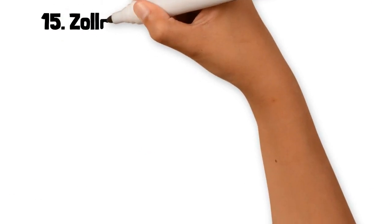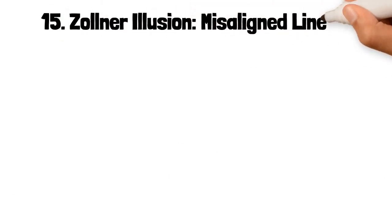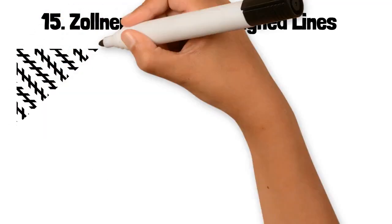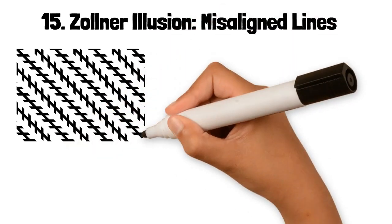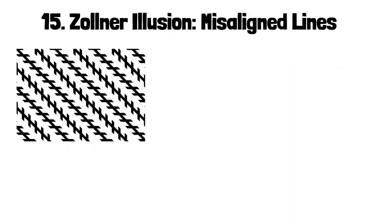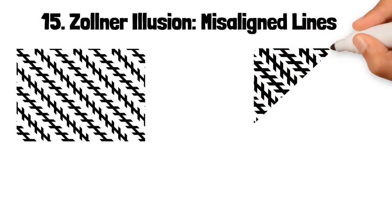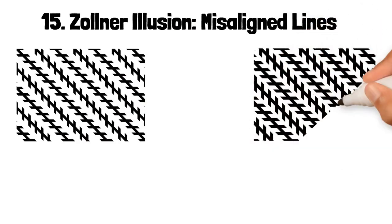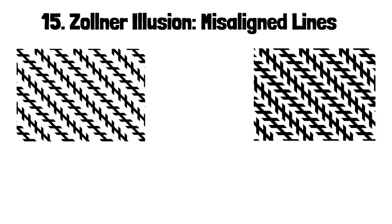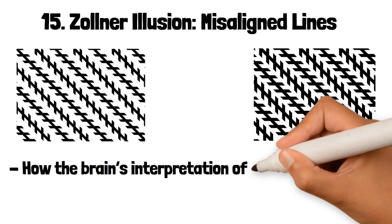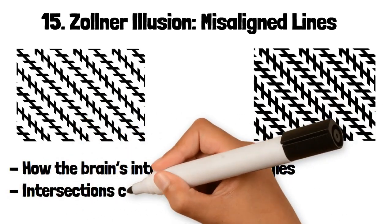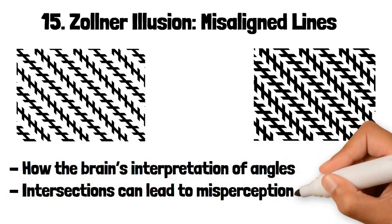15. Zollner Illusion: Misaligned Lines. The Zollner illusion involves parallel lines that appear to be non-parallel due to the presence of short diagonal lines crossing them. These diagonal lines create a visual distortion that tricks the brain into seeing the parallel lines as converging or diverging. This illusion is a classic example of how the brain's interpretation of angles and intersections can lead to misperceptions of linearity.